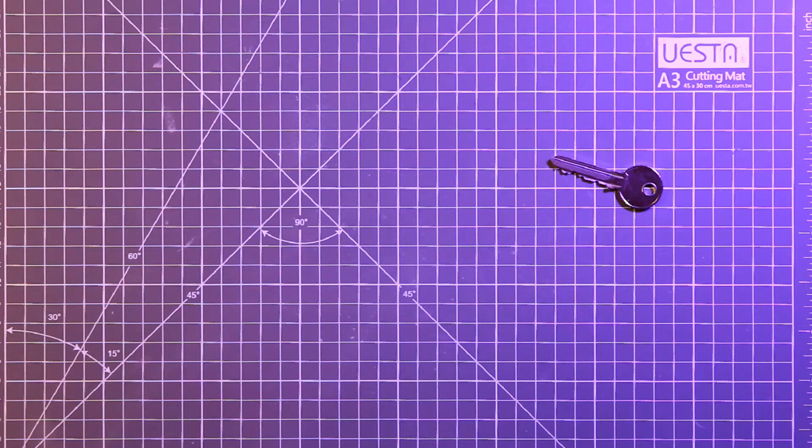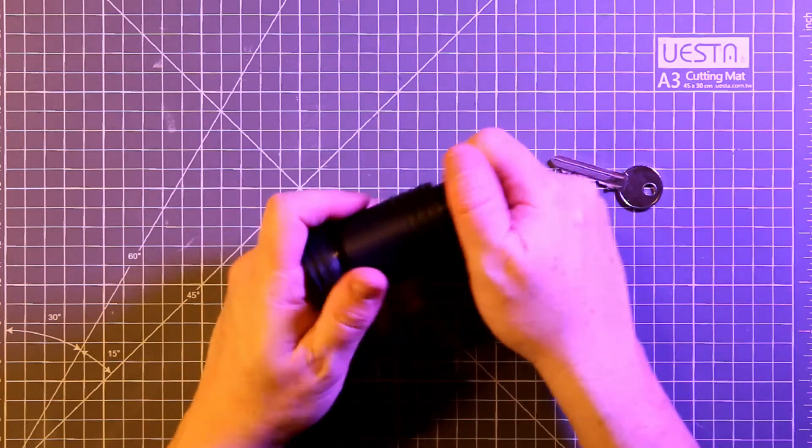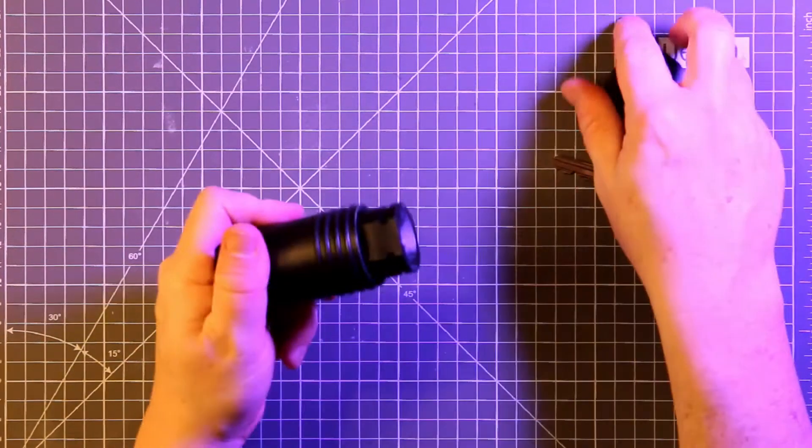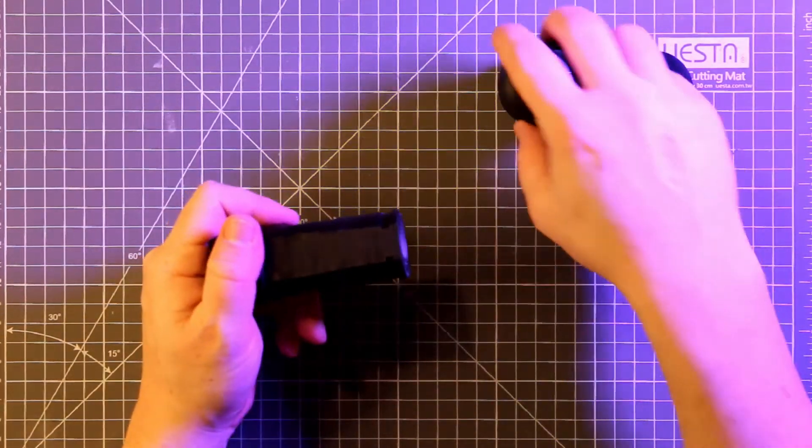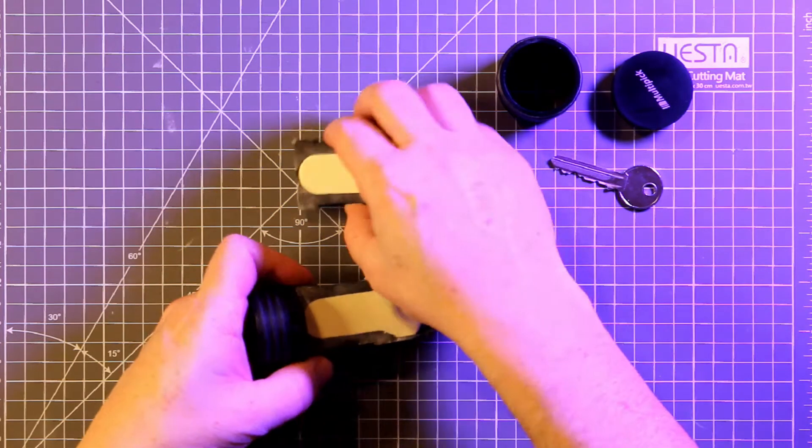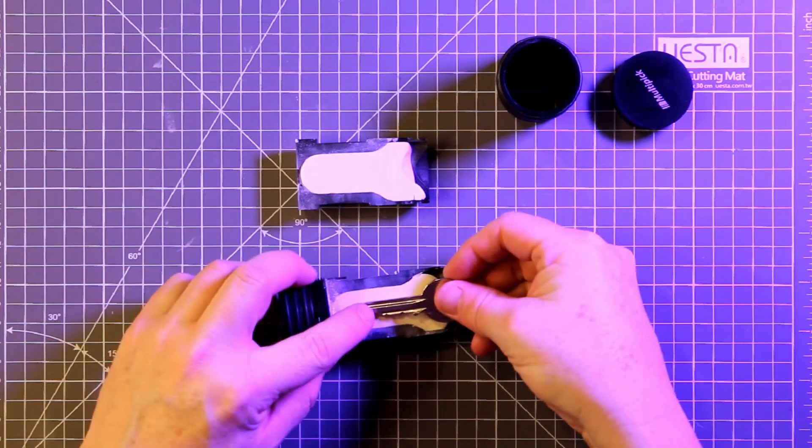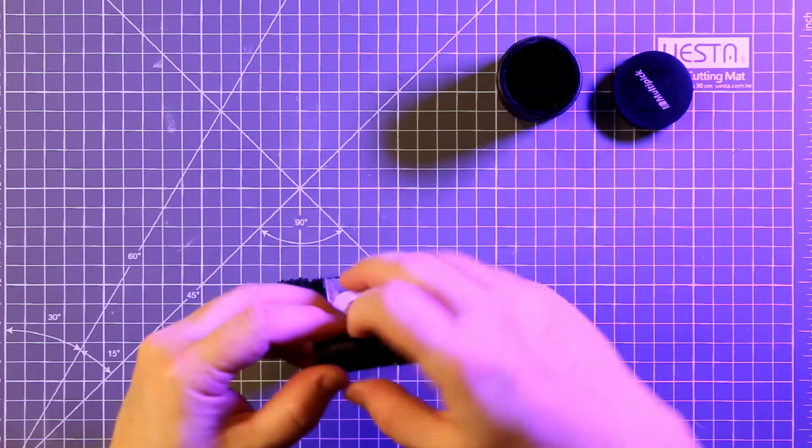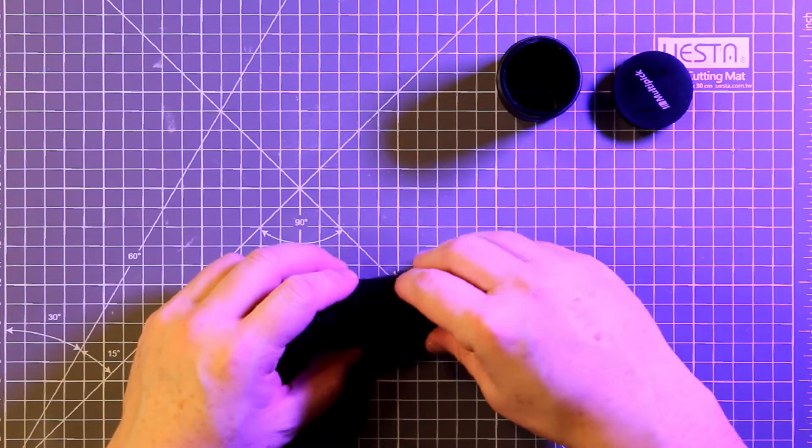So first of all we need a key to copy. Once you have some time alone with the key, pull out the multipick mold and open it up. Unscrew the outside and separate the two halves. Place the key carefully on one side and place the second half on top, carefully pushing the two together.